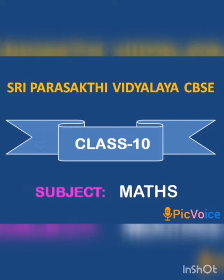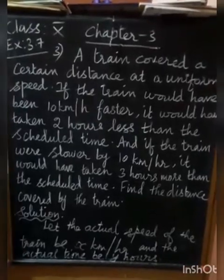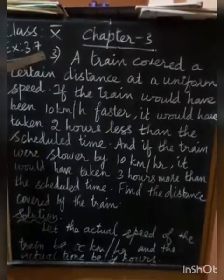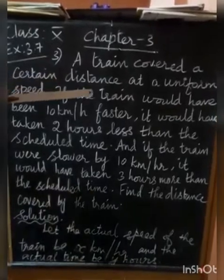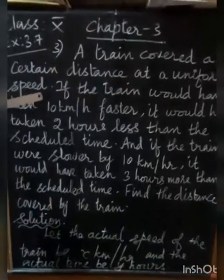Shri Parashikti Vidhyala, CBSE Class 10 Standard, Subject Mathematics. Exercise 3.7, the third sum. A train covered a certain distance at a uniform speed.